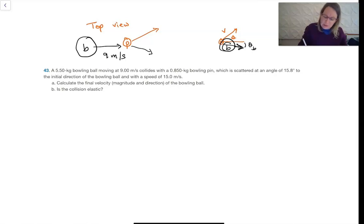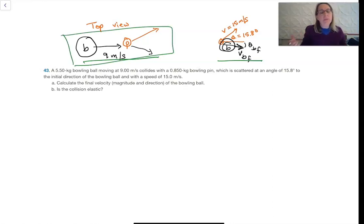So this is 15.8 degrees, and this speed is 15 meters per second. The question is, what is the speed of the ball afterwards and the angle? So this is our initial, this is our final. There are no external forces on this. Our system is the ball and the pin, both of those, the bowling ball and the bowling pin.